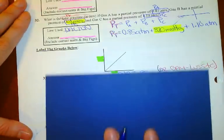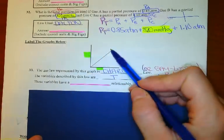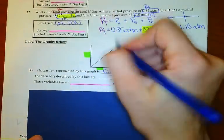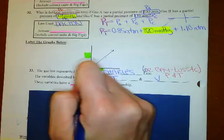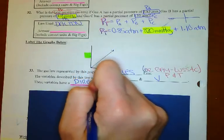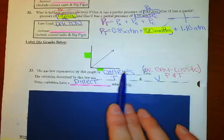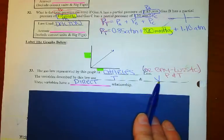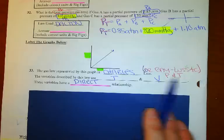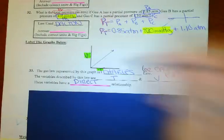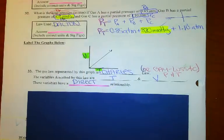Let's take a look at the graphing. There are kind of two answers for 33 — this is a direct relationship for sure. This direct line goes directly between two points. Charles is a direct relationship, so this could be Charles Law with T and V, or it could be Gay-Lussac's with P and T. Make sure we're labeling these axes — this could be volume and temperature, or pressure and temperature.